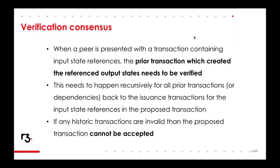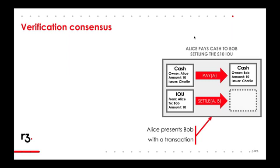When a party on the network is presented with a transaction containing an input state that is a fungible issued asset on-ledger, they need to verify all of the previous transactions concerning that state. This actually needs to happen recursively all the way back to the transaction where that on-ledger issued asset was originally issued. If throughout this process any transactions are invalid, then the proposed transaction concerning that asset cannot be accepted. So: Alice is settling the 10-pound IOU — the IOU is an input with no IOU as output because Alice is fully settling with 10 pounds of cash, changing ownership of the cash from Alice to Bob.